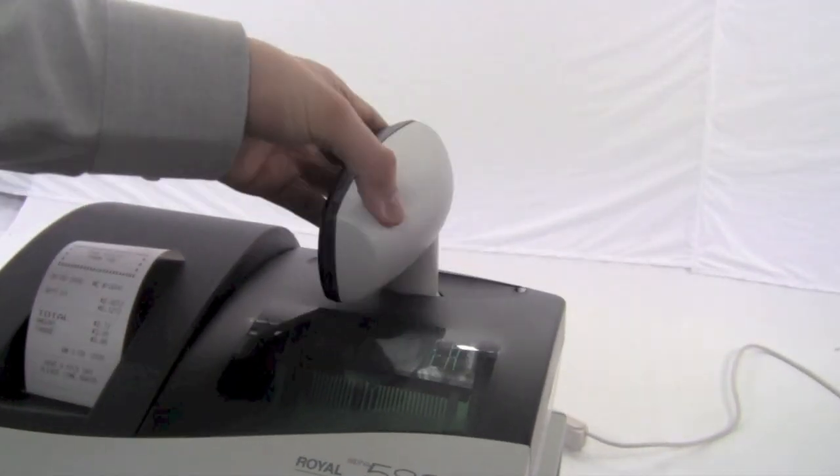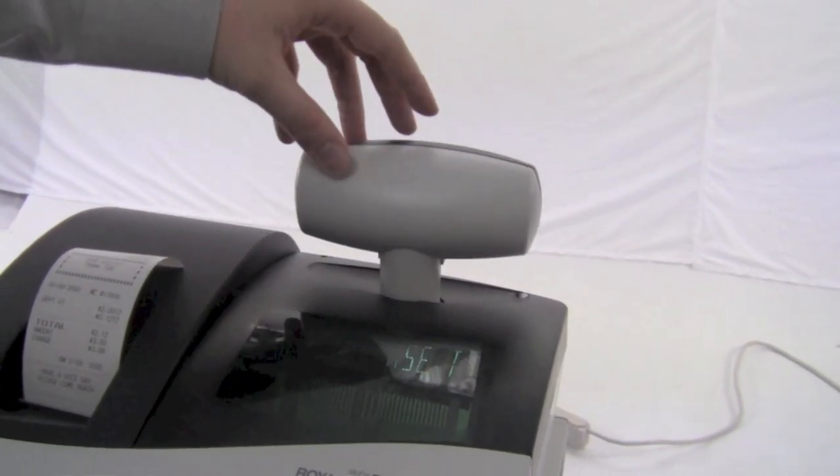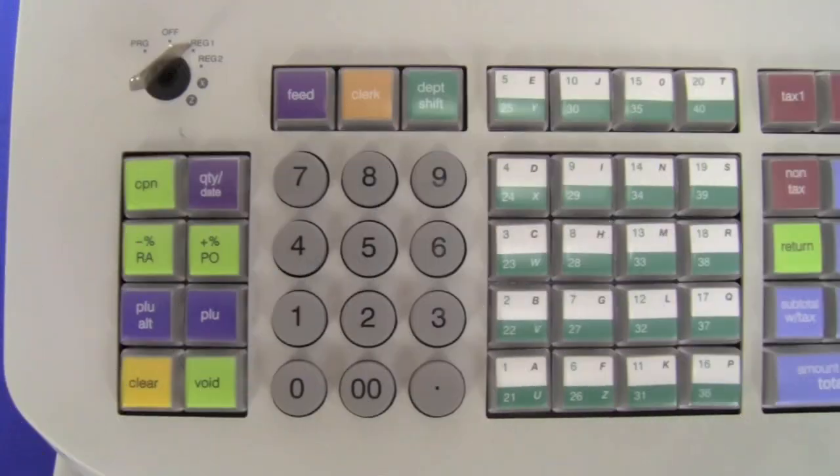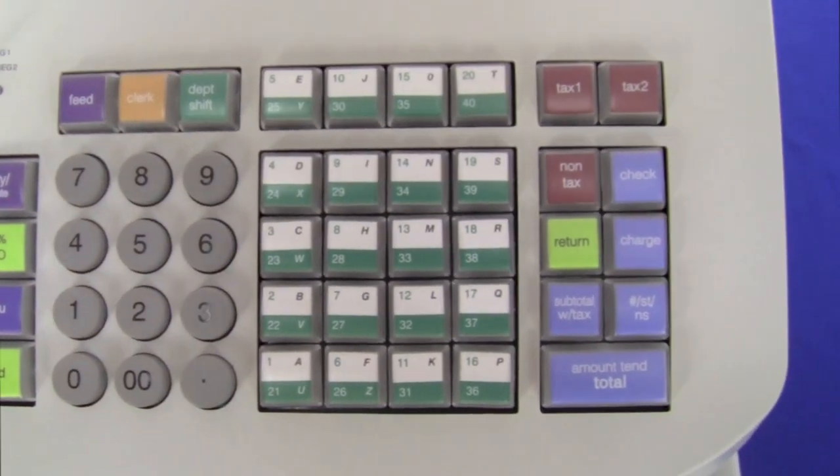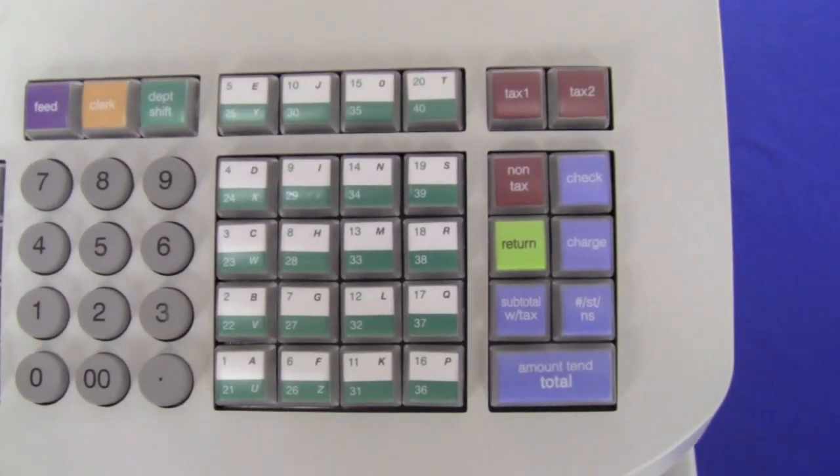First the display which can spin to be visible to the customer. Now let's look at the user keys. There are the number keys, the department keys which can program up to 99 departments, and the tax and total keys.